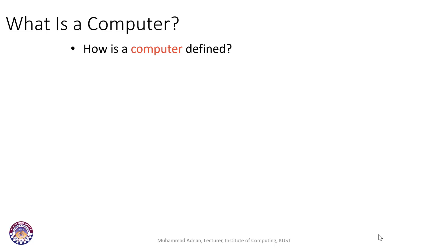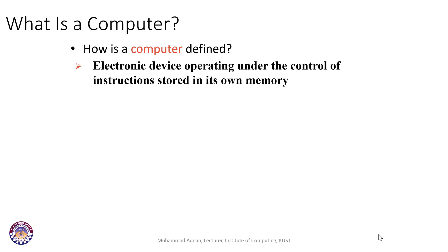How can we define the term computer? A computer is an electronic device that operates under the control of instructions stored inside computer memory. Two things are very important: instructions and the associated data. When you run an instruction, there will be associated data that the instruction manipulates. If you have no instructions, the computer will be like a black box — a dumb machine you cannot do anything with.